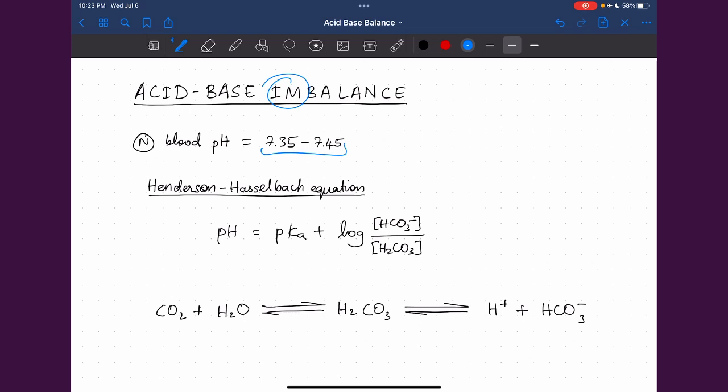But today we are going to discuss about acid-base disorders. So as you all know, the normal blood pH is 7.35 to 7.45, and we have already studied how our body maintains this by all the various mechanisms of regulation.